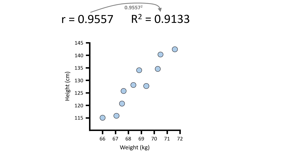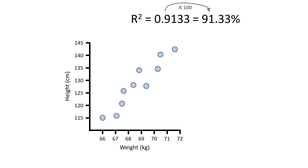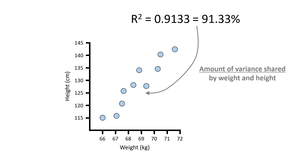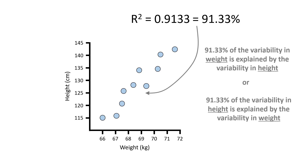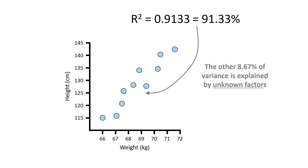In this example, my r-squared is 0.9133. To interpret this value better, it is more informative to multiply it by 100 to convert it to a percentage. So the r-squared of 0.9133 equals 91.33%. This value indicates the amount of variation shared between the two variables. So here, we can say that 91.33% of the variability in weight is explained by the variability in height. And since it does not matter which way around the variables go on the axis, this means that the reverse is also true: 91.33% of the variability in height is explained by the variability in weight. This means that the other 8.67% of the variance is explained by other factors not measured in the experiment.